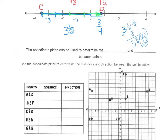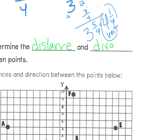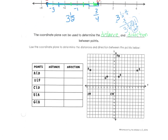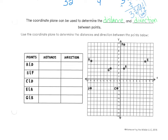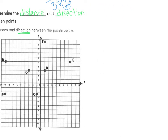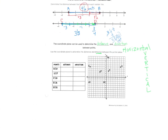The coordinate plane can be used to determine the distance and the direction between points. We can use it to determine the distance and the direction between points. If you need to pause the video to write those in, go ahead. By direction, we mean vertical or horizontal. Vertical goes up and down, and horizontal goes side to side like the horizon. Maybe write those words on the side of your notes so you can remember which is which.